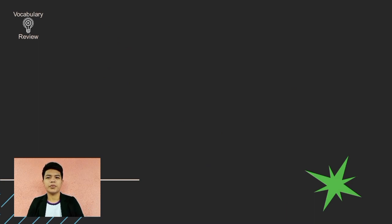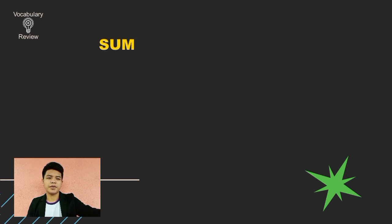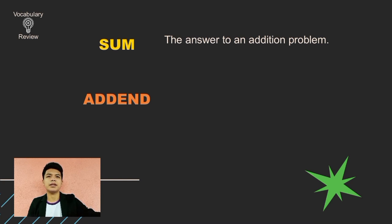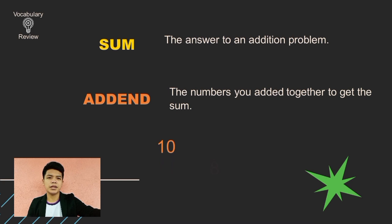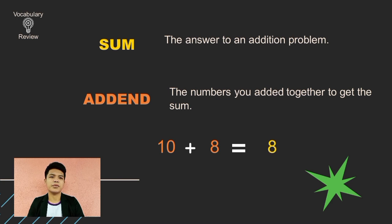But before that, we'll have a vocabulary review. We have here the terms: sum and addend. Sum is the answer to an addition problem, and addend is the numbers you add together to get the sum. For example, we have 8 plus 10. So 8 and 10 are our addends. 8 plus 10 equals 18, and 18 is what we call the sum.